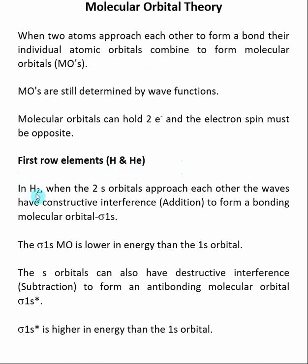The first example we will discuss is H2. Here we have two individual H atoms. Each H atom has an s orbital, and when these two s orbitals approach each other, the waves that make up the orbital can have constructive interference, which means they add on to each other. So the two waves combine to form a stronger wave.